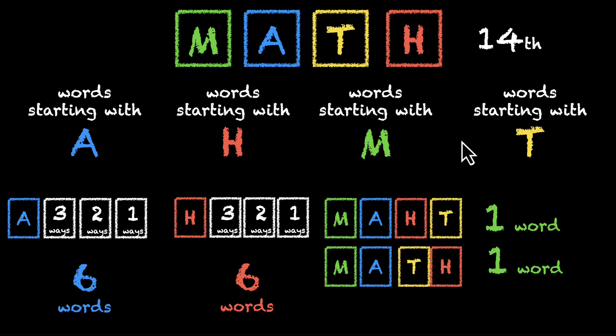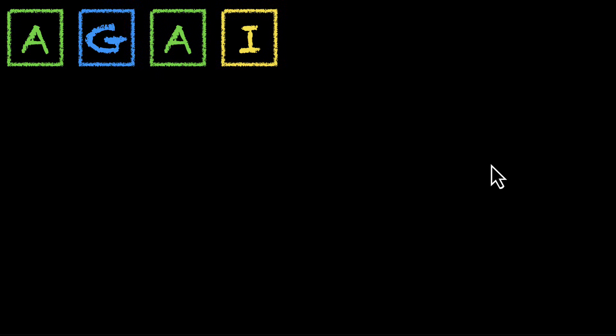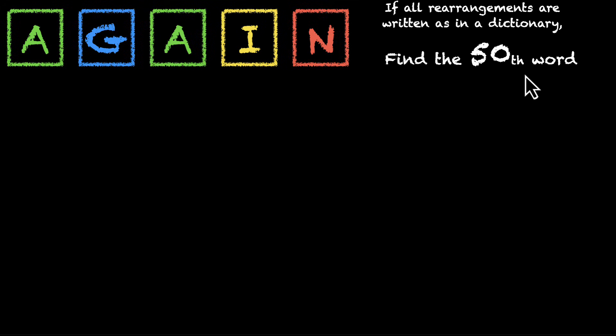So first we did this in slow motion, and then we figured out what parts of our process can be accelerated, can be sped up. Let's practice this skill on a different problem. Here we have the word again: A, G, A, I, N. And the question is, if all rearrangements are written as in a dictionary, find the 50th word. Pause the video, think about it.